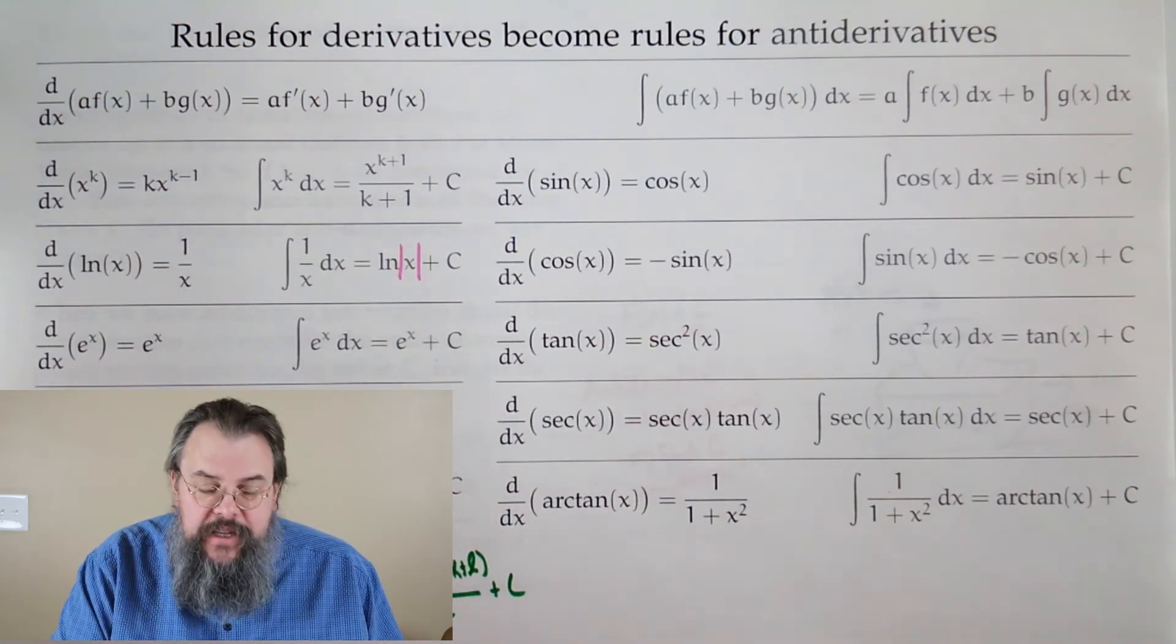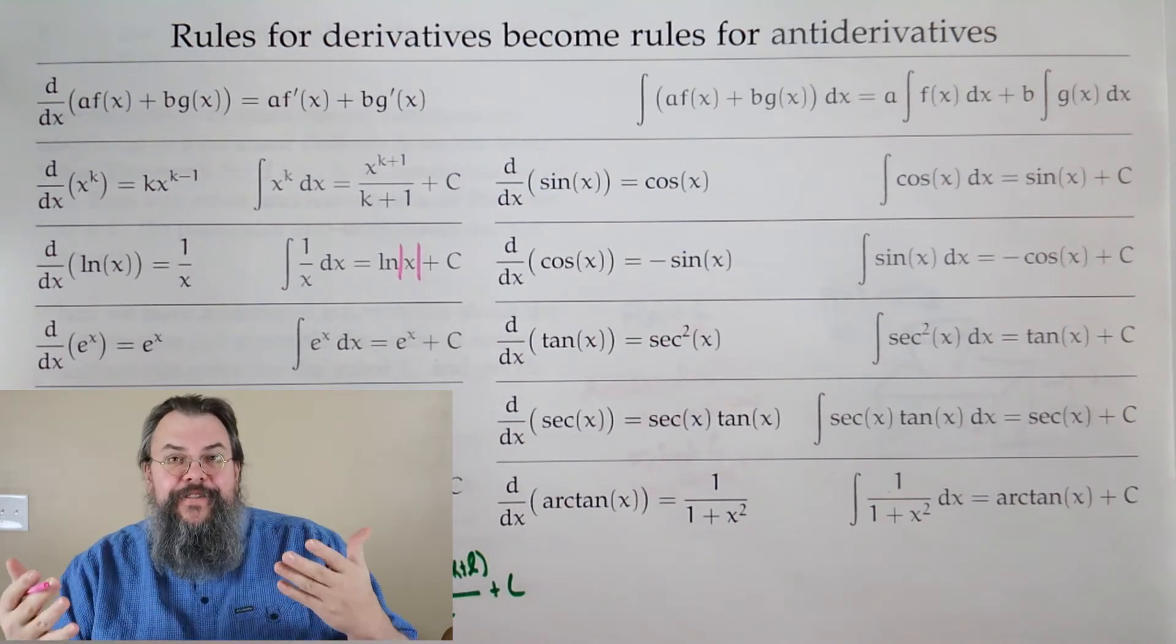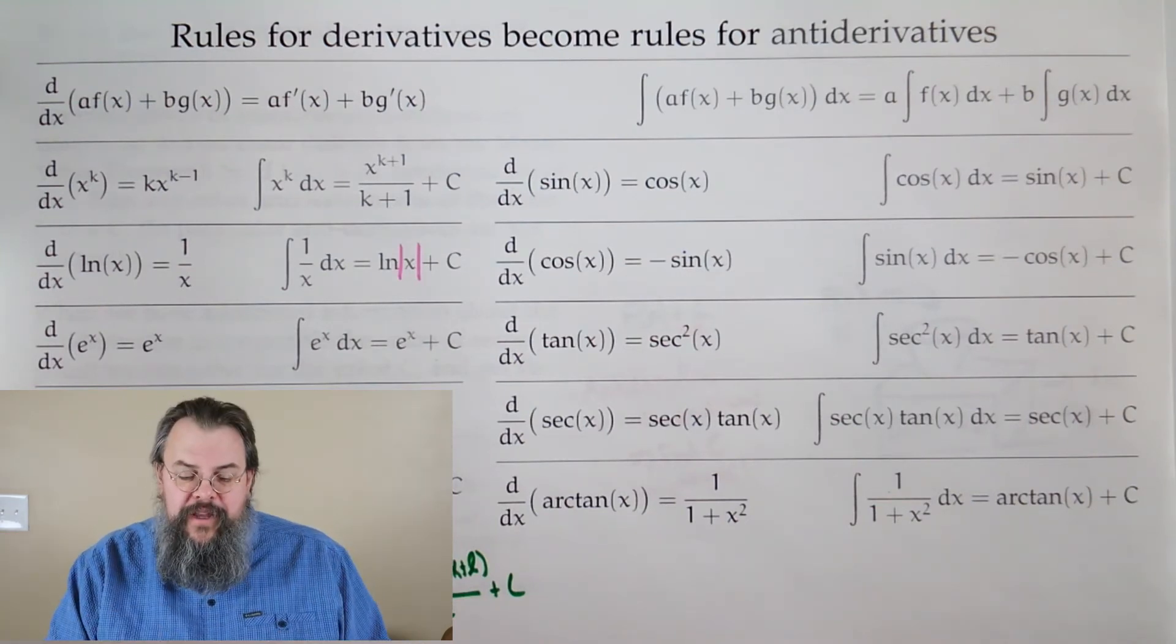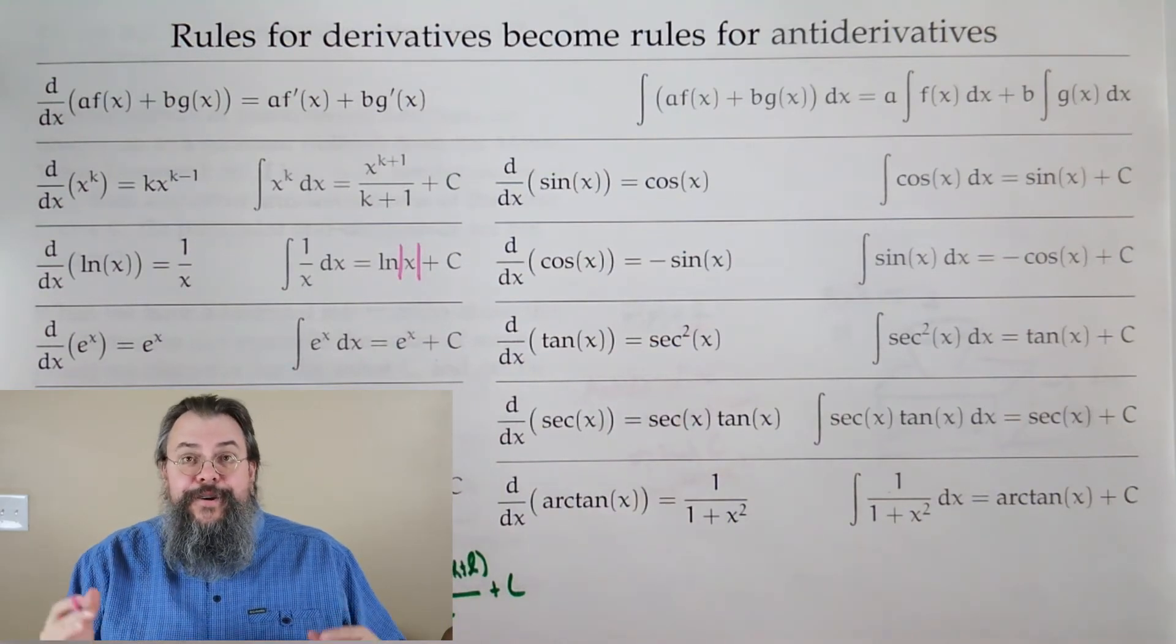The derivative of e to the x is e to the x. Wow, such a cool function, right? Take the derivative of that function, the function comes back. So you take the antiderivative of that function, that function comes back. No surprise.